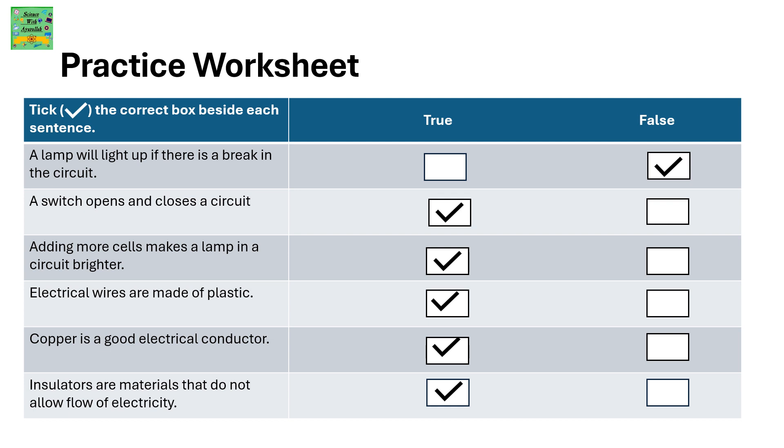Electrical wires are made of plastic. Yes, it's true because plastic is a good insulator. Copper is a good electrical conductor. That's also true. Insulators are materials that do not allow flow of electricity. True.